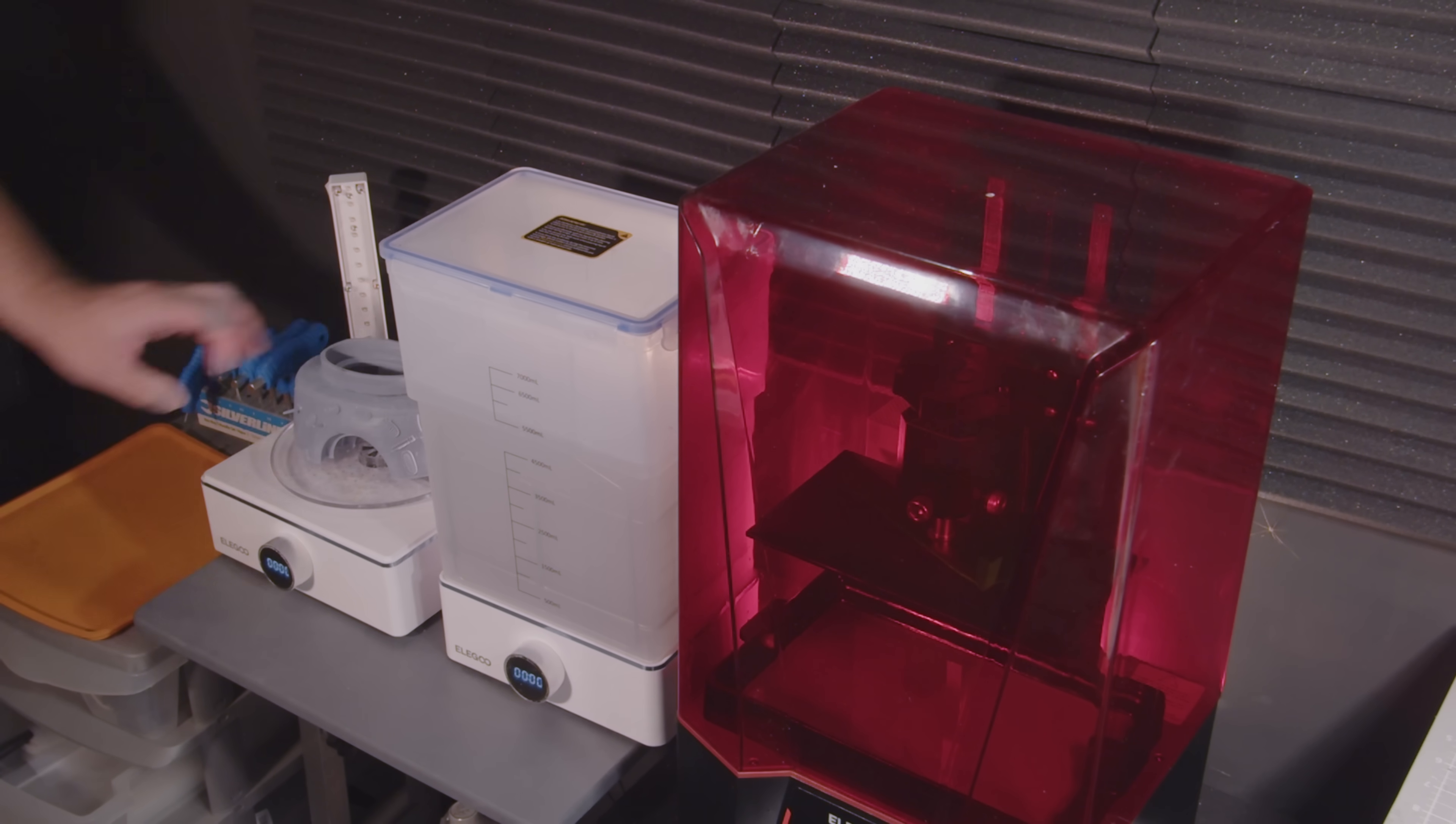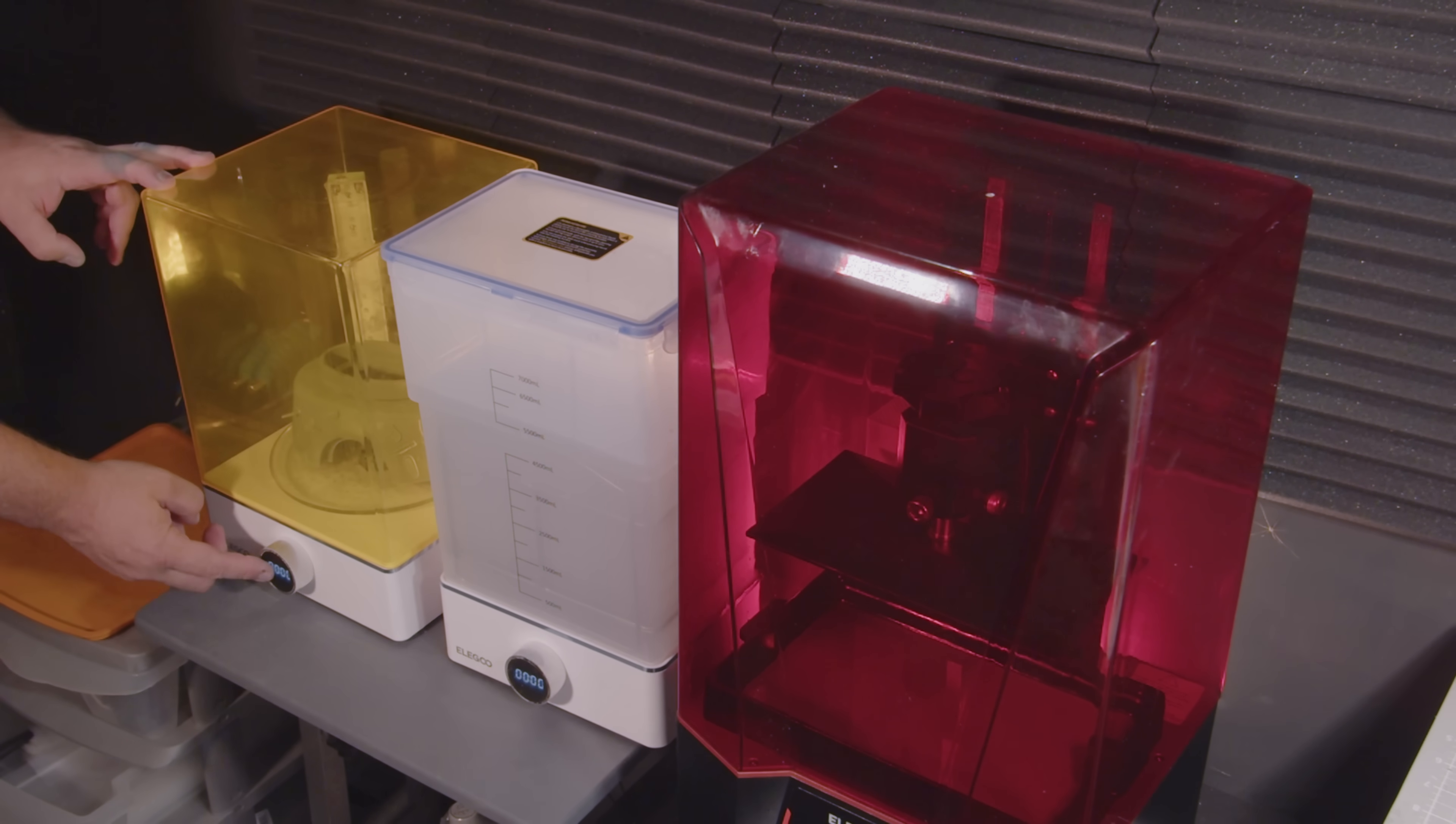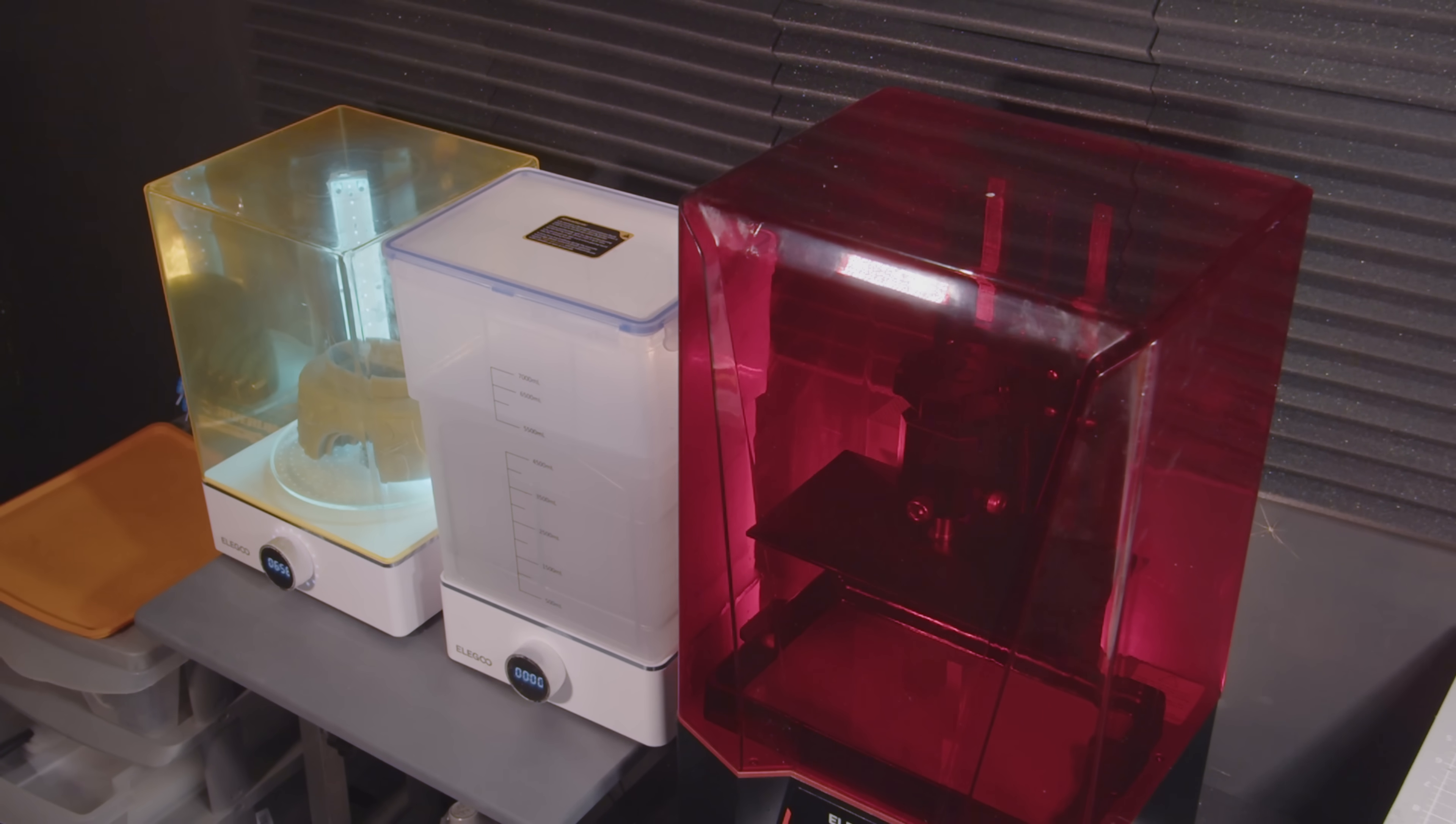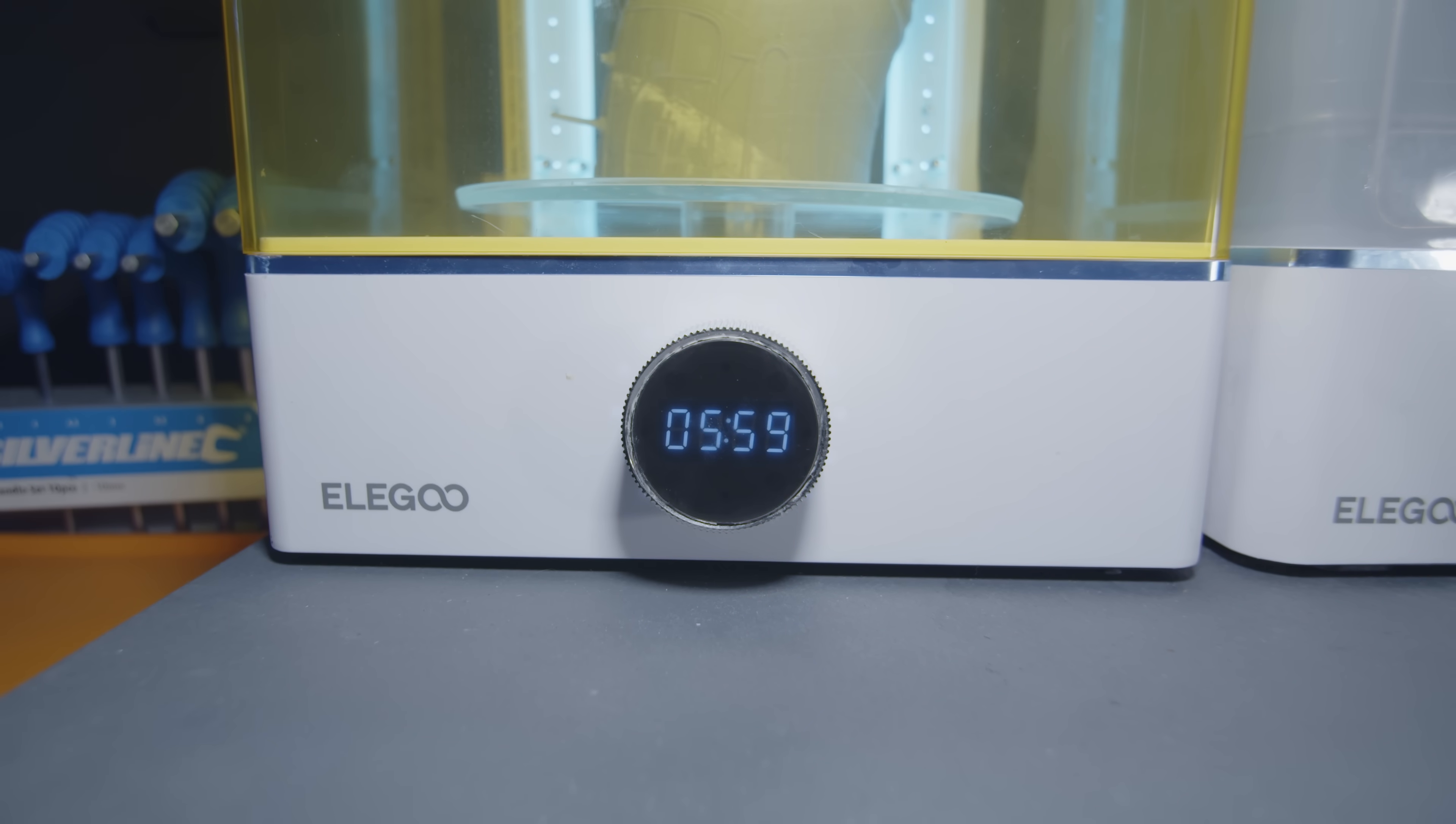It's time to cure our prints and this is an important part of the process. It ensures that our parts effectively reach maximum strength and dryness, as our print resin is cured by exposure to ultraviolet light. By placing into the curing station and setting a desired exposure time on the dial, it allows our part to receive the required wavelength of UV light to cure the resin.